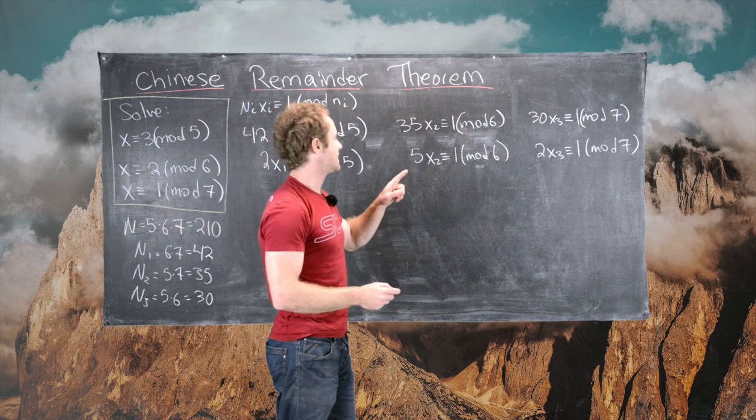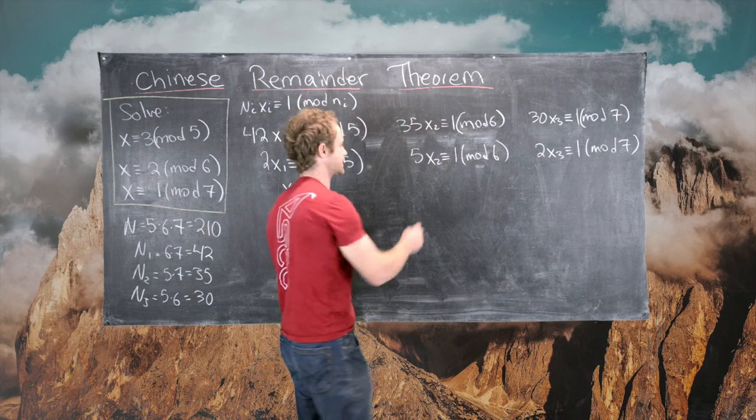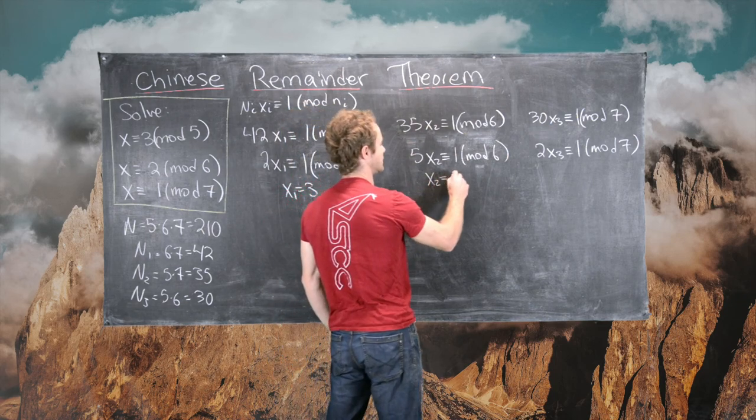And then 5 times 5 is equal to 25, which is 1 mod 6, so that means we can take X2 equal to 5.